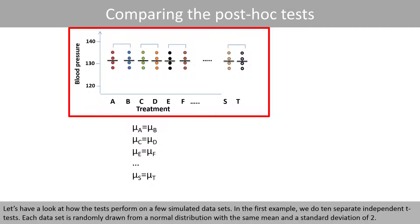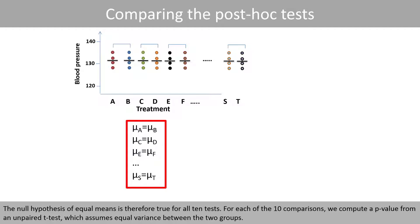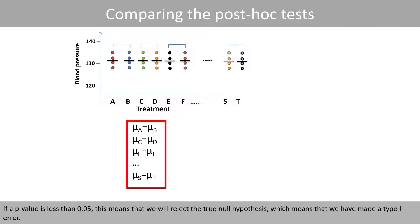Let's have a look at how the tests perform on a few simulated datasets. In the first example, we do 10 separate independent t-tests. Each dataset is randomly drawn from a normal distribution with the same mean and a standard deviation of 2. The null hypothesis of equal means is therefore true for all 10 tests. For each of the 10 comparisons, we compute a p-value from an unpaired t-test, which assumes equal variance between the two groups. If the p-value is less than 0.05, we reject the true null hypothesis, which means we have made a type 1 error.